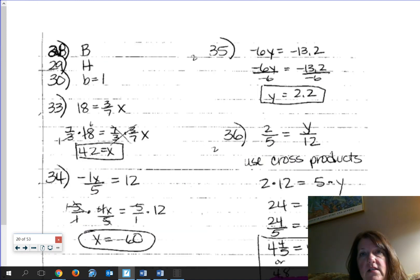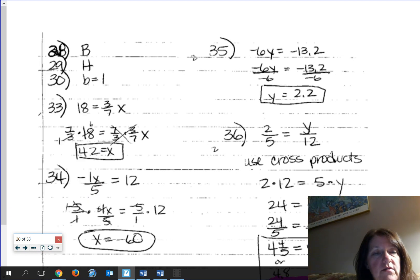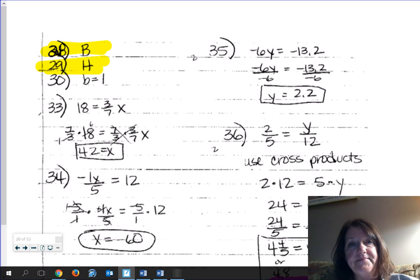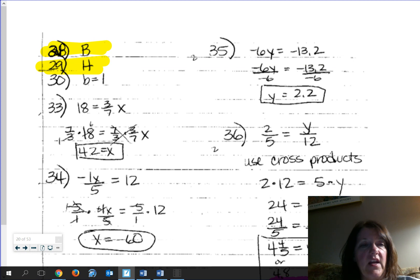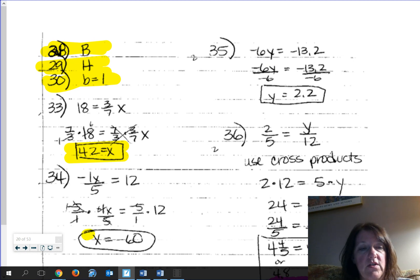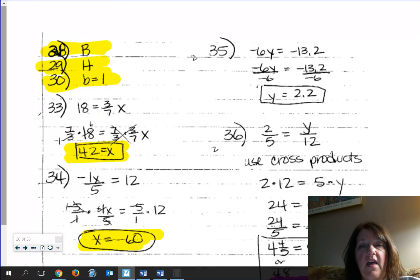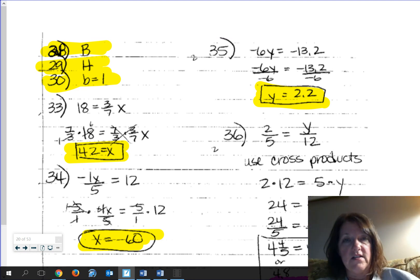So check yours. 28 is B. 29 is H. 30, you get B is 1. Now, as some review of some equation solving, for number 33, you should end up with x being 42. Number 34, you should get negative 60. 35, you get a decimal, 2.2. That's fine. And 36, you solve that one. You also get a decimal, 4.8.